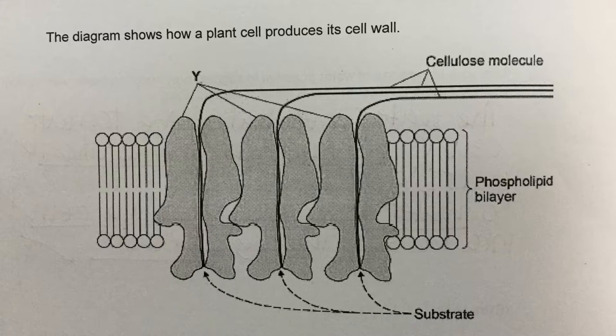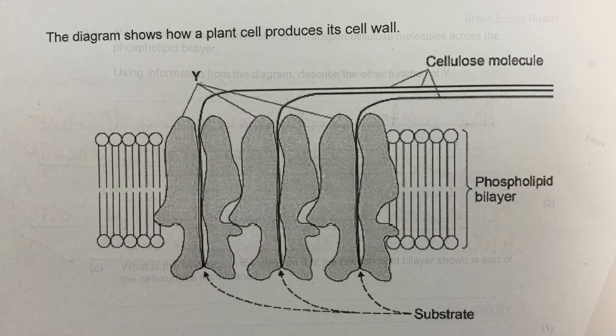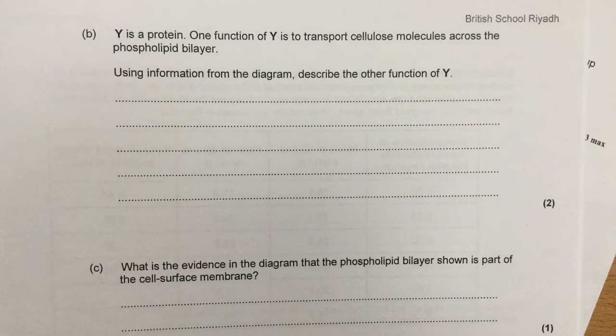So this membrane-bound enzyme is taking the substrate into it — it shows you that with the arrows — and out of the other end comes these cellulose molecules. Of course, we know that cellulose is made from beta-glucose, and that they line up and form these long strands with high tensile strength. The question says one function of protein Y is to transport cellulose molecules across the phospholipid bilayer, and we can see that in the diagram.